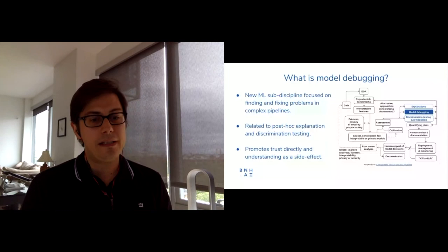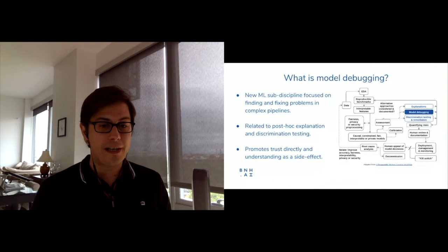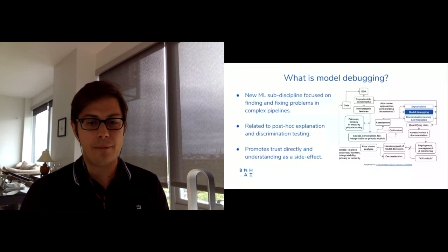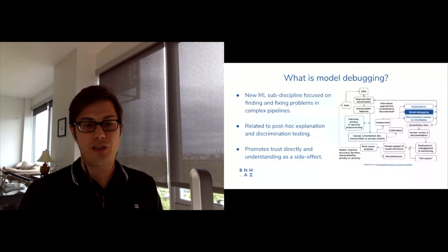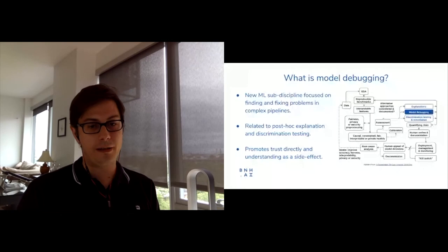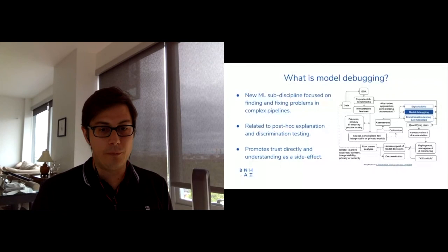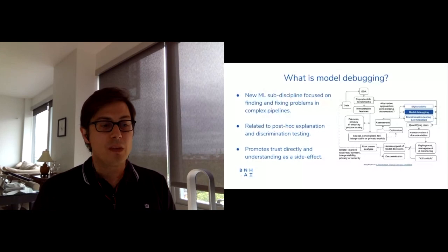Model debugging is highly related to other newer disciplines like post-hoc explanation and explainable AI, and discrimination testing and remediation. I'm going to focus on model debugging as the QA of machine learning — a bit separate from explaining a model and a bit separate from discrimination testing, though all these things go hand in hand.